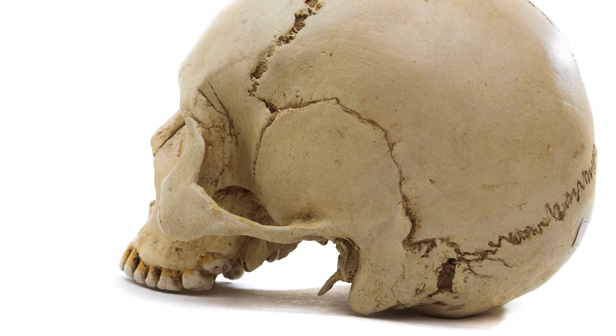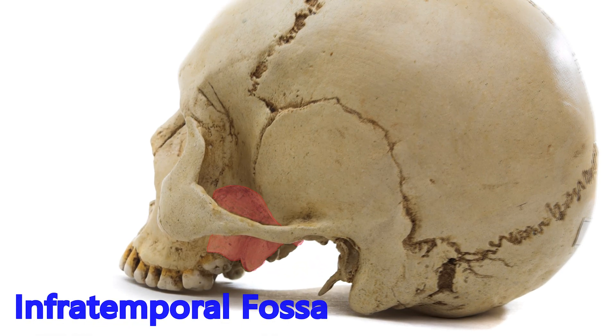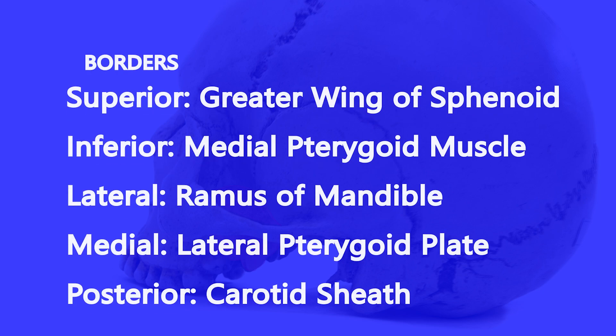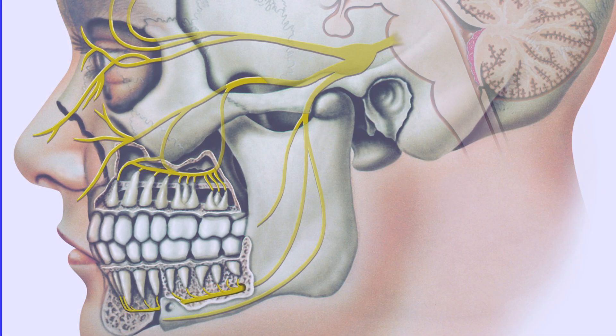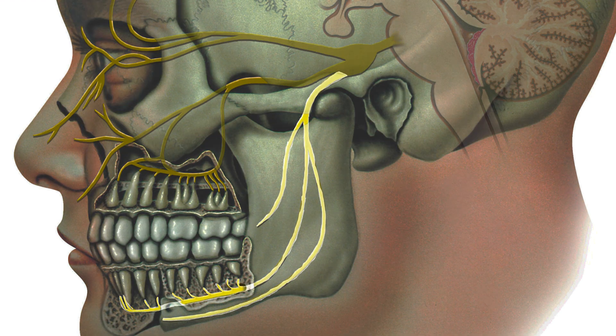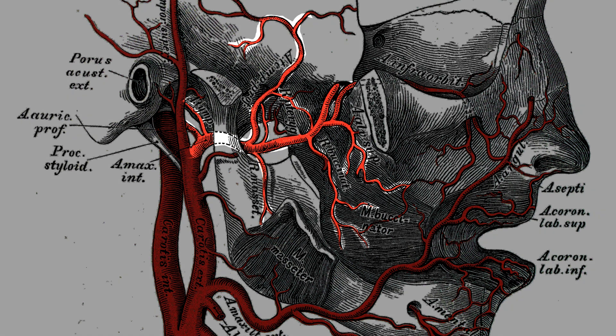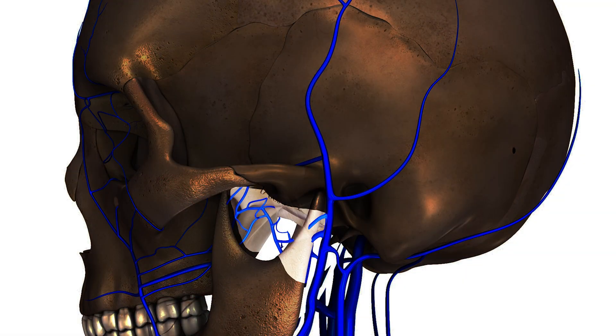So, what is the infratemporal fossa? The infratemporal fossa is a space in the mid-face that is posterior to the maxilla and medial to the mandible. The contents include the mandibular branch of the trigeminal nerve, the chorda tympani (a branch of the facial nerve), the lesser petrosal nerve, and the otic ganglion. The maxillary artery and the pterygoid venous plexus also exist in the infratemporal fossa, so there's a lot of important anatomy here that makes for some scary obstacles when attempting to retrieve a tooth in this area.